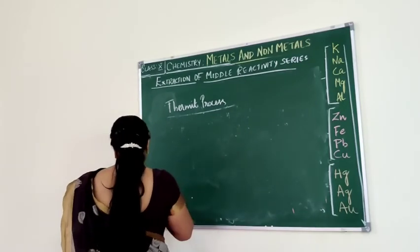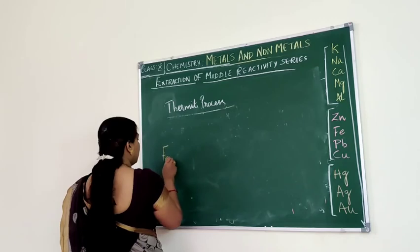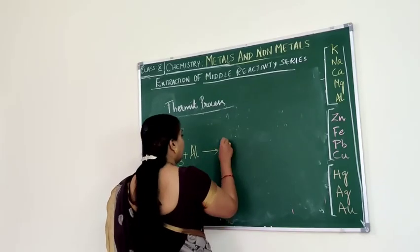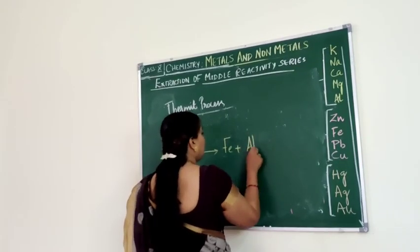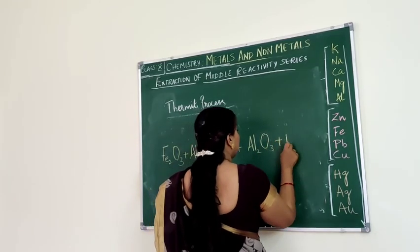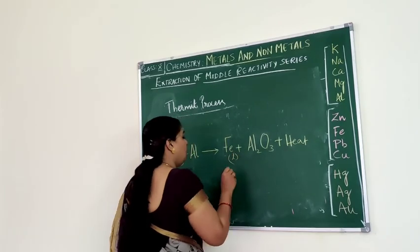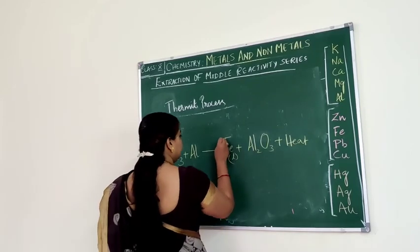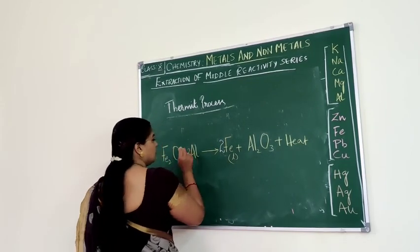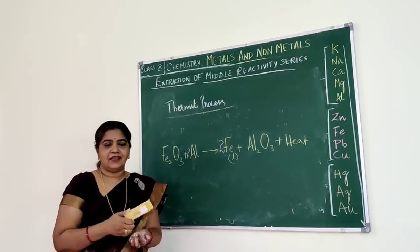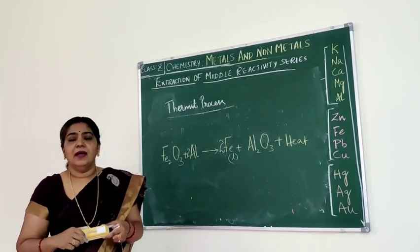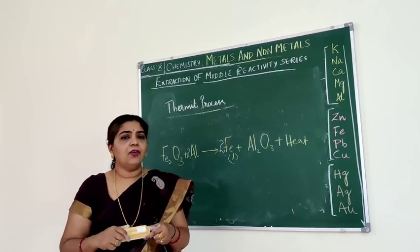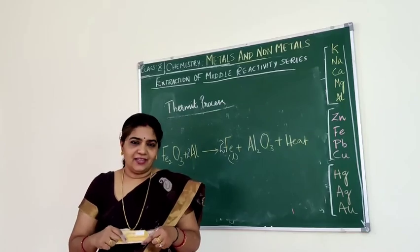The equation for the thermite reaction is: Fe2O3 + 2Al → 2Fe + Al2O3, with a lot of heat generated. The iron obtained is in liquid form. This is about the thermite reaction. So we have understood how to obtain metals in the middle reactivity series, and next we will see how to extract metals in the high reactivity series.